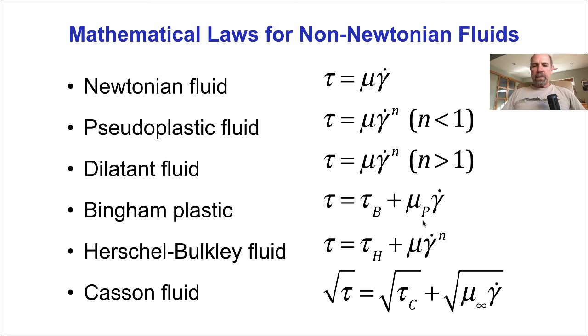Note that in the Bingham plastic and the Casson fluid, the non-linearity is purely a function of the yield stress. If the yield stress is zero in these equations, then we recover the linear Newtonian relation, because now we could square both sides of this equation. As the shear rate gets larger, the effect of the yield stress on the relationship between the shear stress and the shear rate gets smaller and smaller.